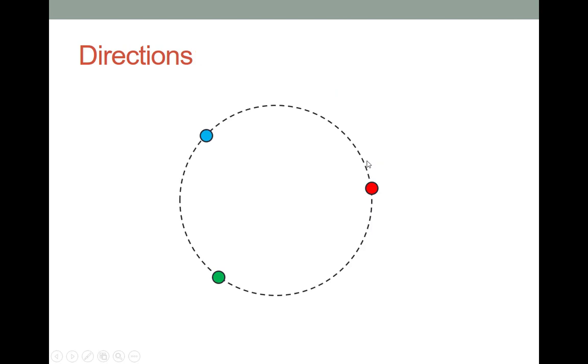So, summarizing. If I have objects moving in a circle at constant speed, then the velocity will point tangent to the circle in the direction of the rotation. So, as I'm drawing my arrows, these objects are moving in a counterclockwise circle. The acceleration for all of them will point towards the center of the circle.